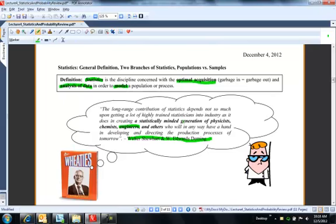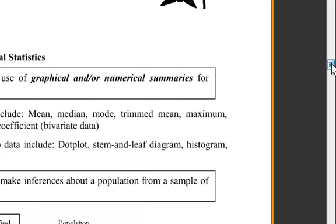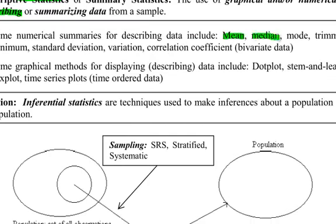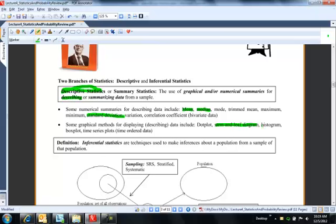It's important to have a random sample, and it's important before you run certain tests that you have nicely normally distributed data. There are two kinds of statistics. One is descriptive statistics — you get a sample of data and describe it either numerically or graphically. You find important numerical summaries like the mean, median, and standard deviation. We can also use graphs — stem and leaf plots, histograms, and box plots like we did in 223.